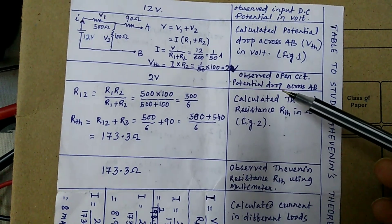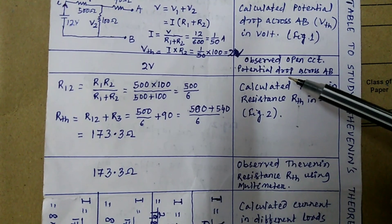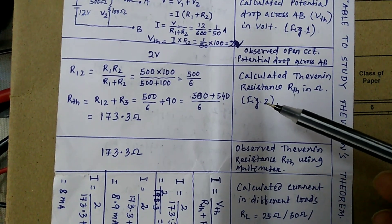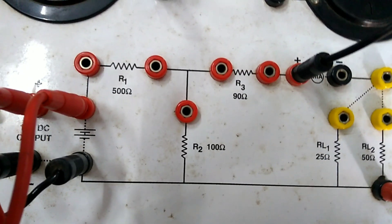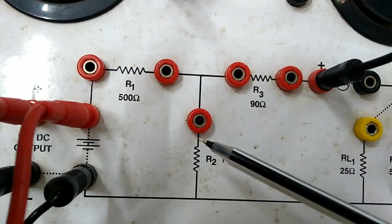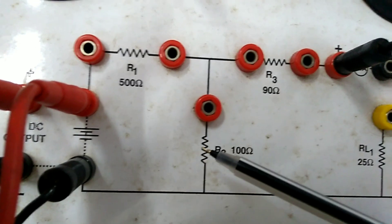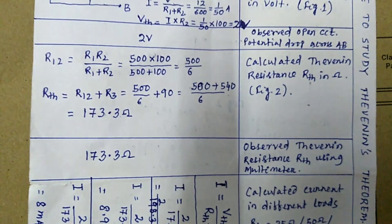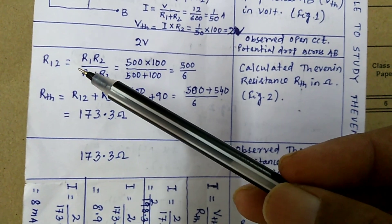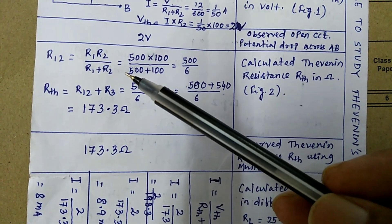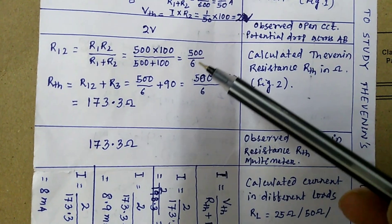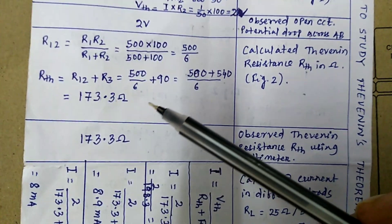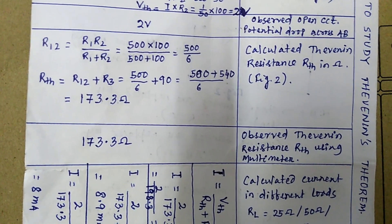You calculate using simple Ohm's law. Now you calculate the Thevenin equivalent resistance. There are three resistances: R1, R2, and R3. R1 is 500 Ohm, R2 is 100 Ohm, and R3 is 50 Ohm. First calculate the equivalent resistance of R1 and R2 — since they are in parallel, their equivalent resistance will be 500 divided by 6. Then R12 in series with R3 gives an equivalent resistance of 173.3 Ohm.